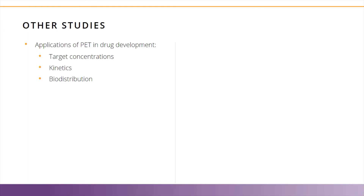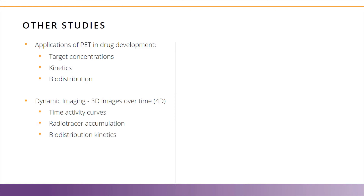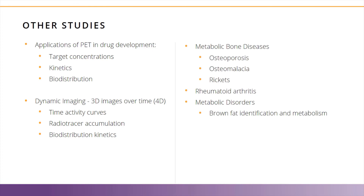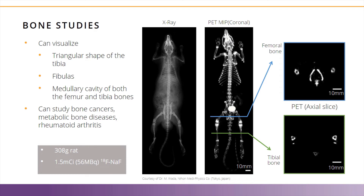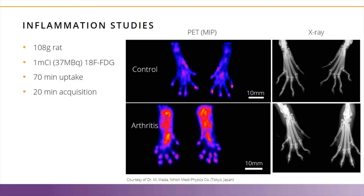In drug development, PET can be used to look at target concentrations, biodistribution, and kinetics. Dynamic 4D imaging — that is, 3D imaging acquired over time — can be used to generate time activity curves to look at accumulation of radiotracers and biodistribution kinetics. Other applications include metabolic bone disorders, rheumatoid arthritis, and metabolic disorders. Sodium fluoride radiotracer can be injected into the rat and taken up into the bones over time, and comparison of X-ray and PET images shows how high-resolution the PET images are, even allowing the medullary cavity of the femur and tibia to be visualized. In inflammation studies, FDG can be used to look at metabolically active areas in a rat model of arthritis.